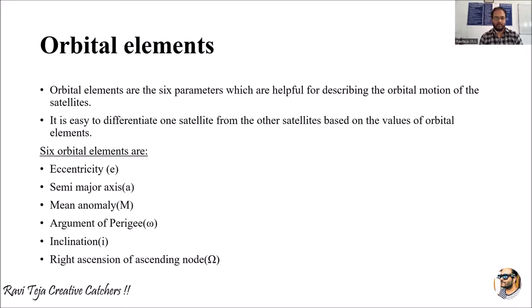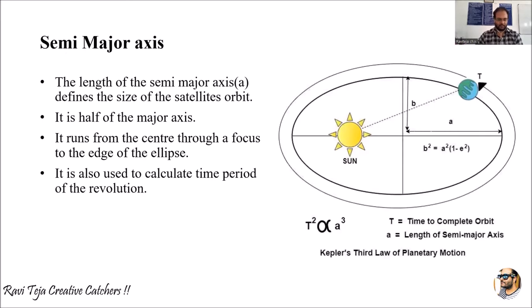There are six important orbital elements we are considering: eccentricity, semi-major axis, mean anomaly, argument of perigee, inclination, and right ascension of ascending node. Let's see each orbital element one by one.